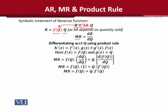When we write this form, we can calculate the derivative as well, because both functions are in terms of Q. Otherwise, AR was difficult to differentiate because it was not clear that it depends on Q. In this form, f(Q) exists as the first function, and the other function is Q, which we can name g(Q), for the sake of the formula.